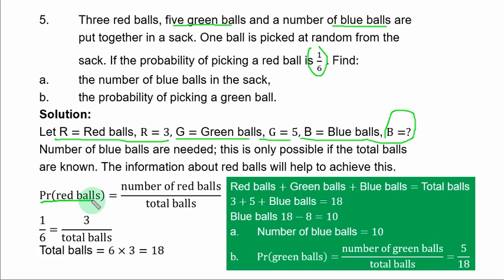Probability of red balls is equal to number of red balls over total balls. The probability is 1 over 6, number of red balls they are 3, total is unknown. If you cross multiply, you have 1 times total balls equal to 6 times 3, you have 18. So red balls plus green balls plus blue balls equal to total balls. That is 3 plus 5 plus blue balls equal to 18. If you collect like terms, you have blue balls equal to 18 minus 8, and that is 10. So number of blue balls are 10.